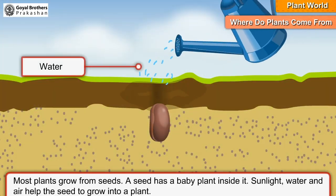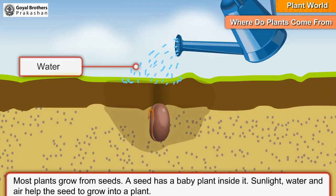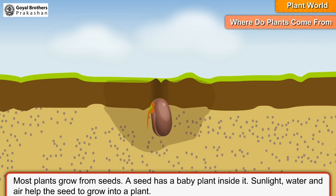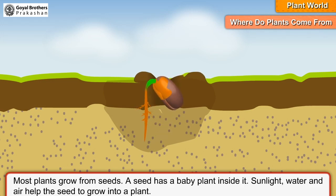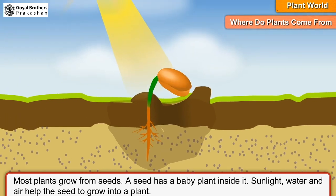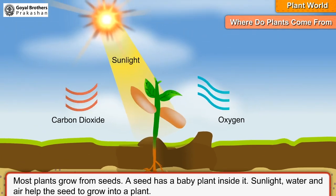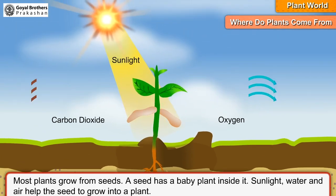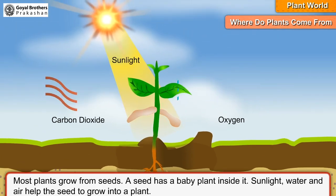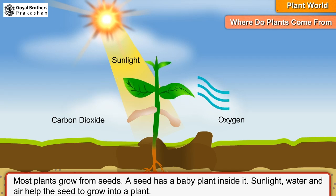Where do plants come from? Most plants grow from seeds. A seed has a baby plant inside it. Sunlight, water and air help the seed to grow into a plant.